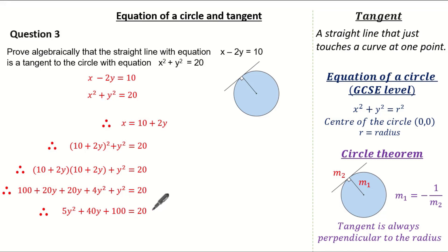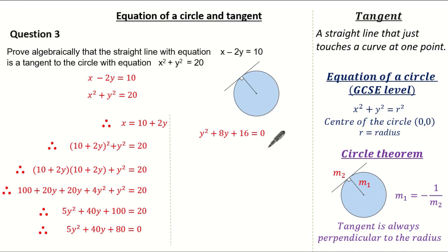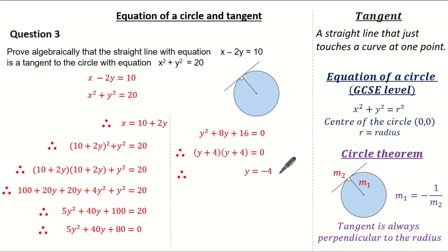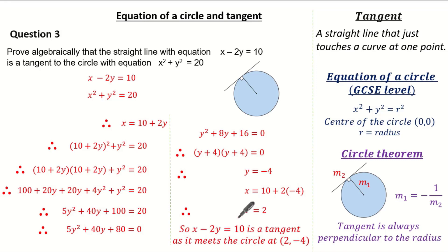Remember when solving quadratics, always equate to 0. This gives 5y squared plus 40y plus 80 equals 0. Dividing every term by 5 — the highest common factor — gives y squared plus 8y plus 16 equals 0. Factorising, two numbers that multiply to 16 and add to 8 are 4 and 4, so it's (y plus 4)(y plus 4). There is only one solution: y equals minus 4. Substituting back gives x equals 2. Therefore x minus 2y equals 10 is a tangent because it only meets the circle at one point: (2, -4).